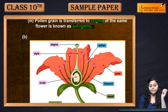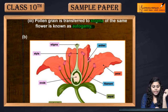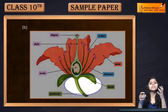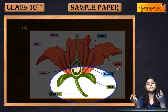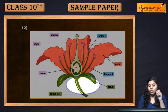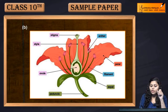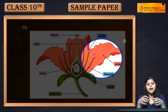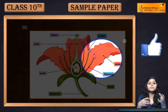Jo green part hai flower ka, jo pet leaves ki tarah dikta hai, that is the sepal. Aur jo colorful part hai flower ka — that is the petal — jo attract karti hai kisi bhi vectors ko.